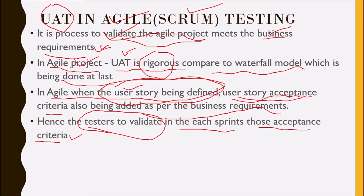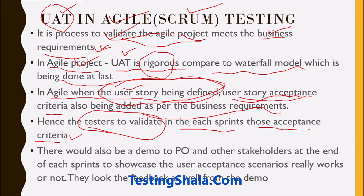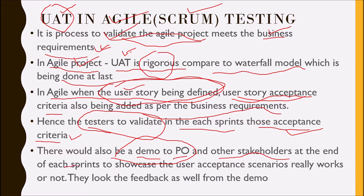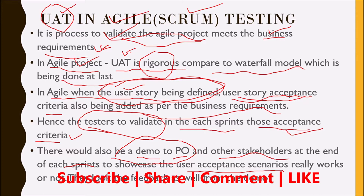That is the first step in UAT — the tester validates the initial requirements for every user story. That is the advantage in Agile: UAT is done from the beginning itself rather than waiting until the last moment. Once the testers validate the user acceptance criteria in each sprint before signing off the user story, the tester has to demo to the Product Owner, with the help of the Scrum Master, giving a demo on each user story to product owners and other relevant stakeholders at the end of each sprint.